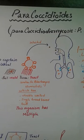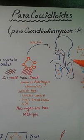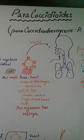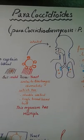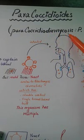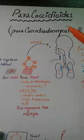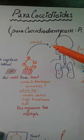Paracoccidioides is a systemic fungus, meaning that it can cause infection in various parts of the body or organs. As the name suggests, it causes the disease paracoccidioidomycosis — 'mycosis' being the suffix for fungal infection. The prominent organism causing this specific disease is important to study.